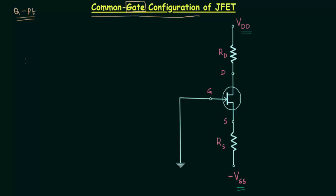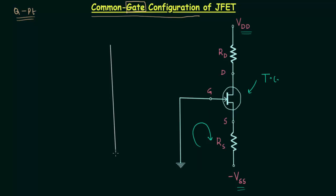The operating point we will get once we have the intersection between the load line and the transfer curve. We already know how to plot the transfer curve of JFET, and to plot the load line we have to apply Kirchhoff's voltage law in the input loop. So these are the two things we will do.